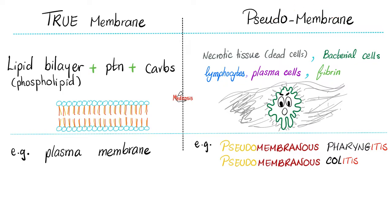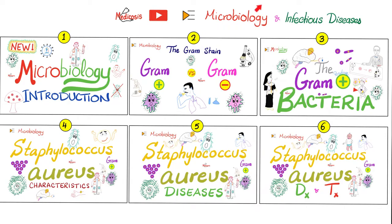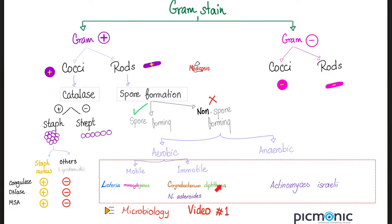We have two famous pseudomembranes: pseudomembranous pharyngitis caused by Corynebacterium diphtheriae, and pseudomembranous colitis caused by Clostridium difficile. Please watch the videos in this playlist in order. Corynebacterium diphtheriae is an immotile, aerobic, non-spore-forming, gram-positive rod.